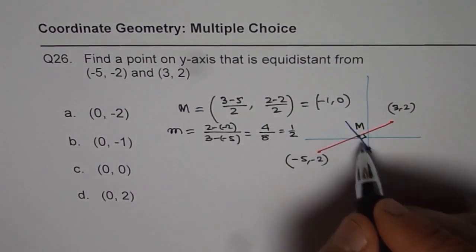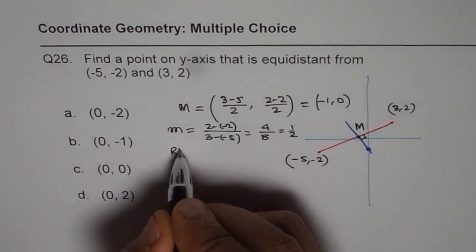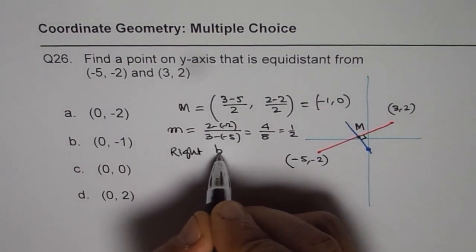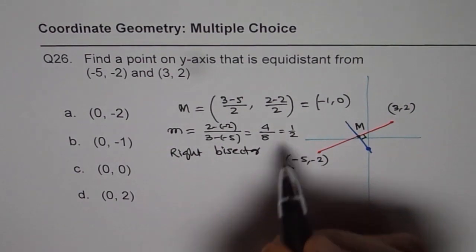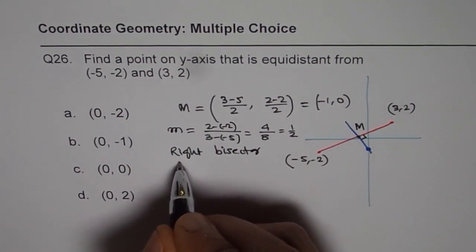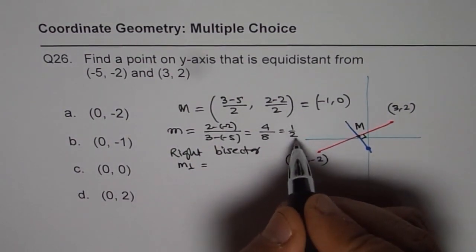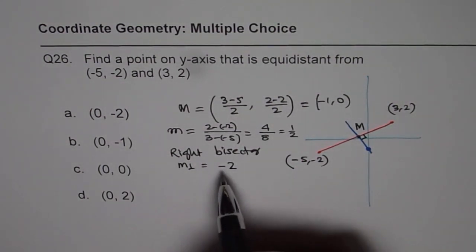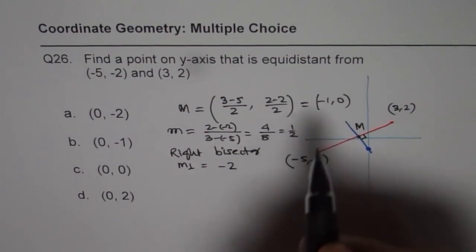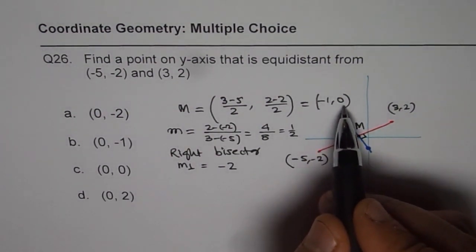So slope of the right bisector will be how much? Right bisector will be -2. So slope of the right bisector will be the negative reciprocal, -2. So that is the slope of the right bisector, and it passes through the point (-1, 0).